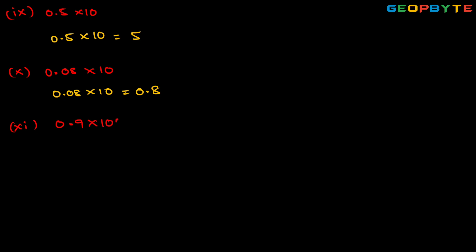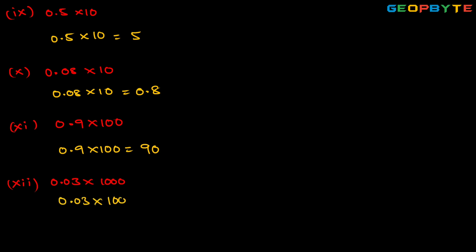Next, eleventh one: 0.9 into 100. Multiplying a decimal by 100, the decimal point is shifted to the right by two places, giving 90. Next, twelfth one: 0.03 into 1000. On multiplying a decimal by 1000, the decimal point is shifted to the right by three places — first place, second place, third place — giving 30. The result of 0.03 into 1000 is 30.